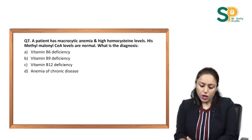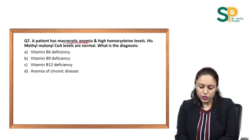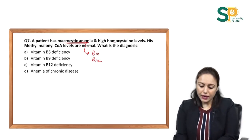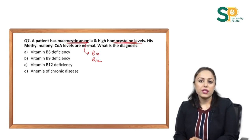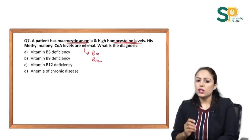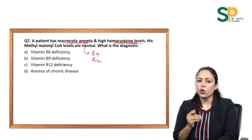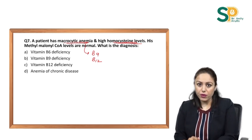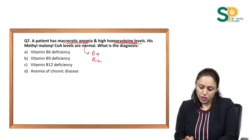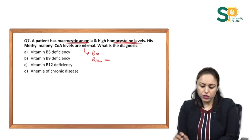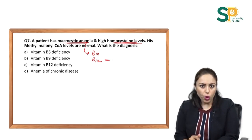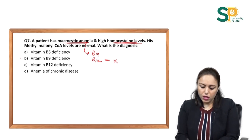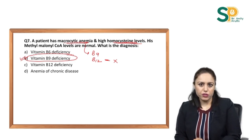Question number 7: a patient has macrocytic anaemia, which means either B9 or B12 deficiency, and high homocysteine levels. High homocysteine can occur in B6, B9, or B12 deficiency. The next clue is that methylmalonyl-CoA is normal — it is raised in B12 deficiency, so if it is normal, it is not B12 deficiency. Therefore the diagnosis is B9 deficiency.